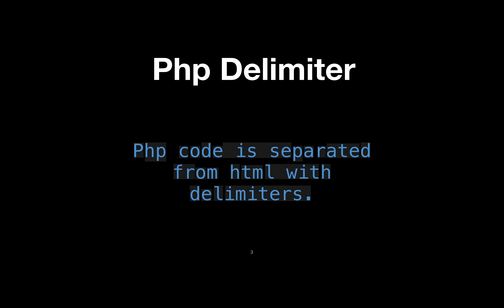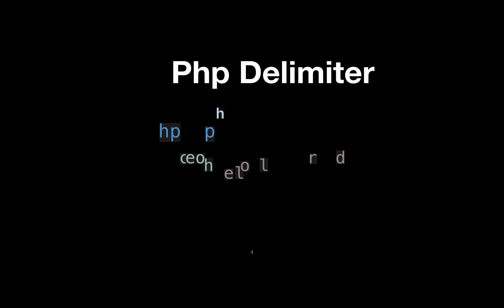So PHP code is separated from HTML with a Delimiter. Why do we need to separate PHP code from HTML? Because in a PHP file we can write HTML, and if you want to write PHP then we need to explicitly tell that between these tags I am writing PHP code, and those tags are known as Delimiter.